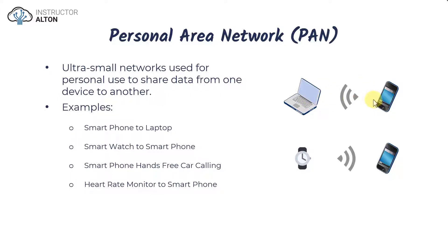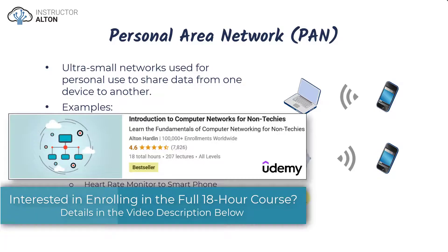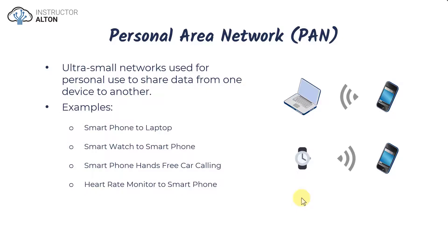Another example of a PAN is a smartwatch. If we have an iPhone and an iWatch and we want the data to communicate between them, they connect via Bluetooth. Another example is hands-free calling in your car — when you set up your phone for hands-free calling, you're usually connecting via either USB or Bluetooth.